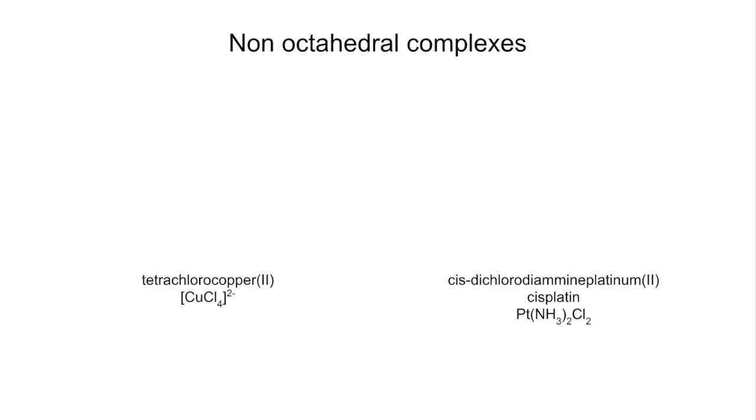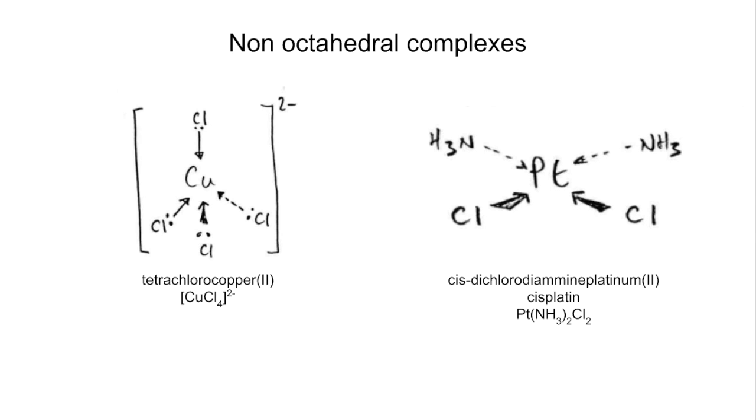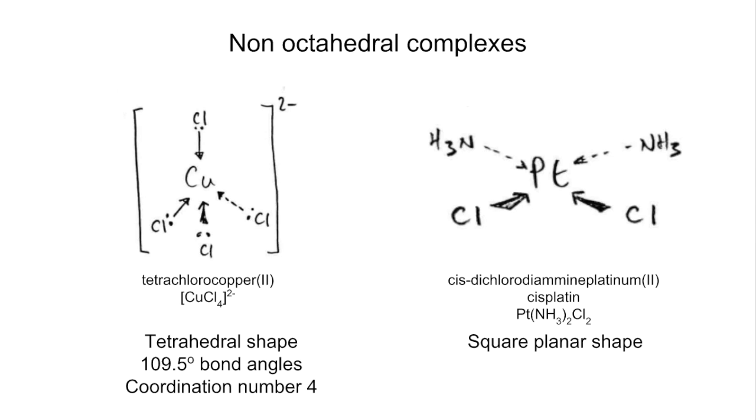So far we've just seen octahedral complexes. We'll look at a couple of non-octahedral complexes now. Tetrachlorocopper 2 just means 4 chlorides around a copper 2+ ion, so that looks like that. And the one on the right is going to be cis-dichlorodiamine-platinum-2, or cisplatin, and you can see its formula. You can see these have different shapes. The one on the left is tetrahedral, so it's got a 109.5 degree bond angle. Coordination number is 4 now. The one on the right, the cisplatin, has a square planar shape, 90 degree bond angles, and the coordination number is still 4.